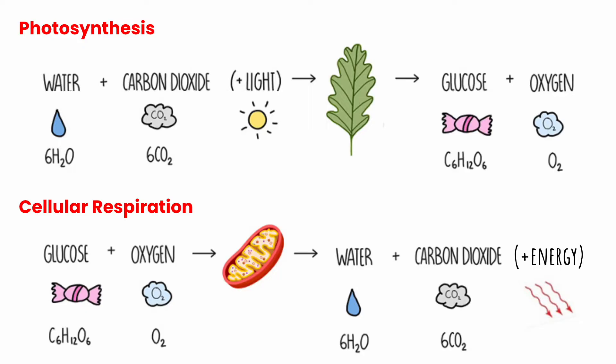Photosynthesis and cellular respiration are reactions that complement each other in the environment. They are in reality the same reactions, but occurring in reverse of each other. As you can see, photosynthesis requires the products of respiration, while respiration requires the products of photosynthesis. They work together so that what is made from one process is used in the other, which allows the carbon and the oxygen that organisms consume and produce to be cycled through the ecosystem.